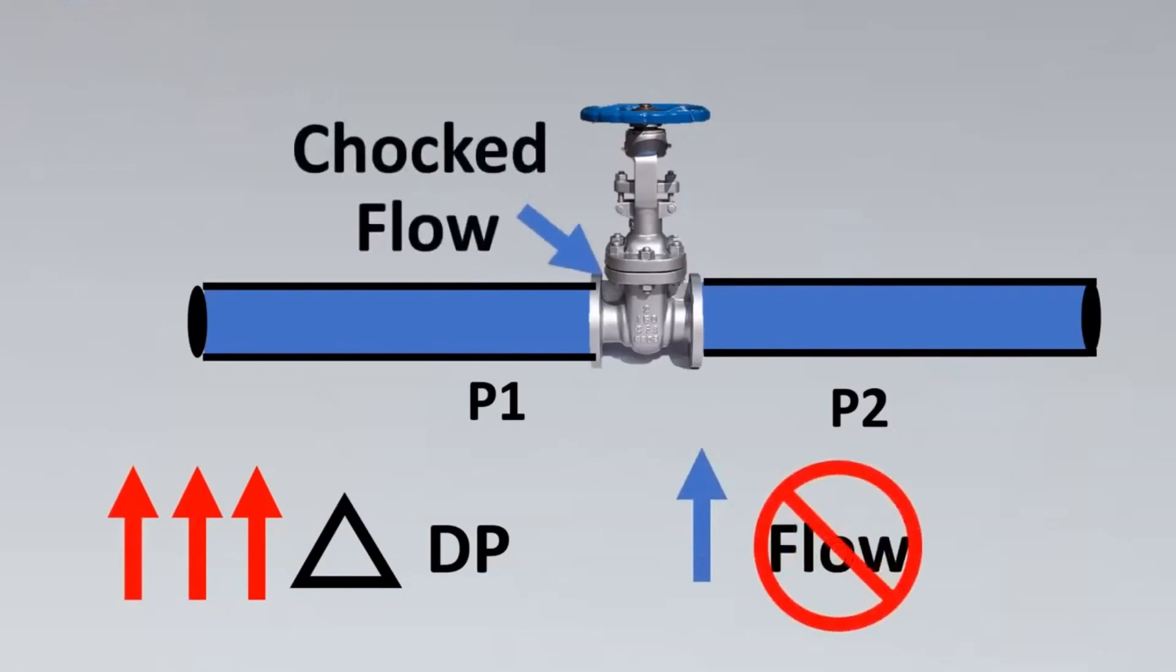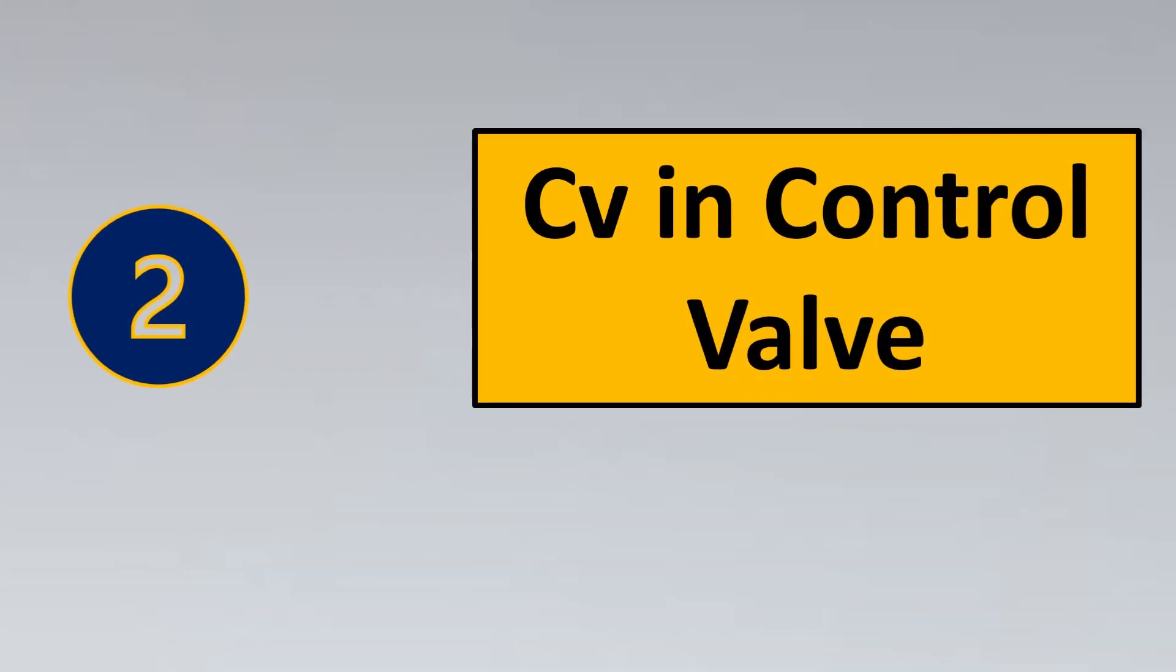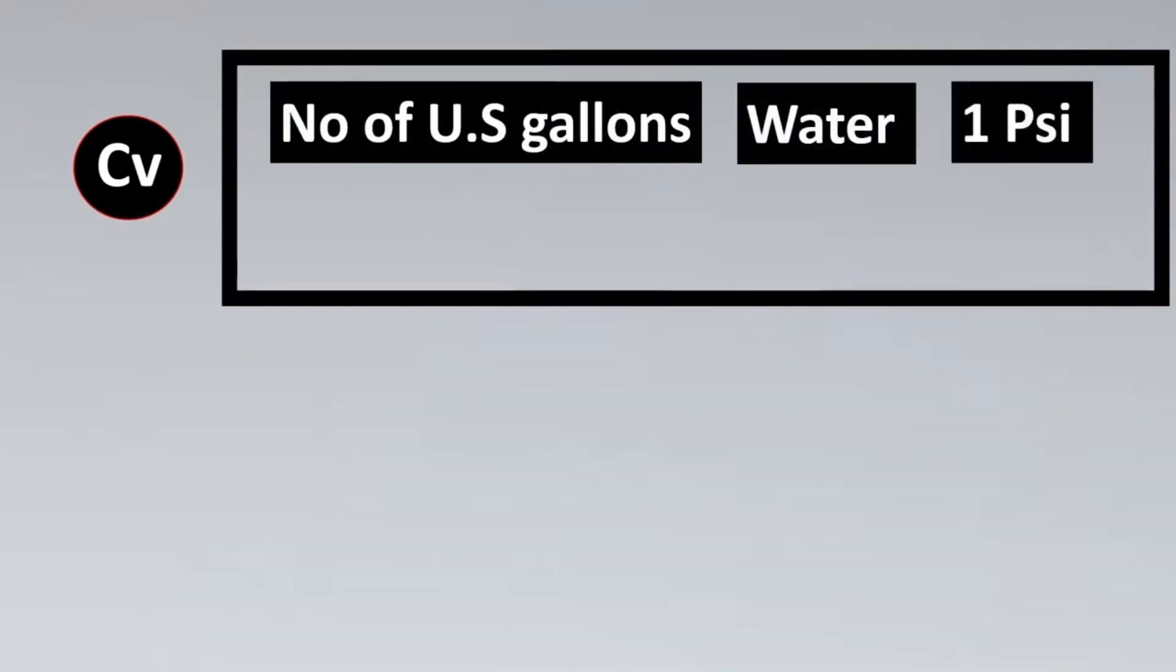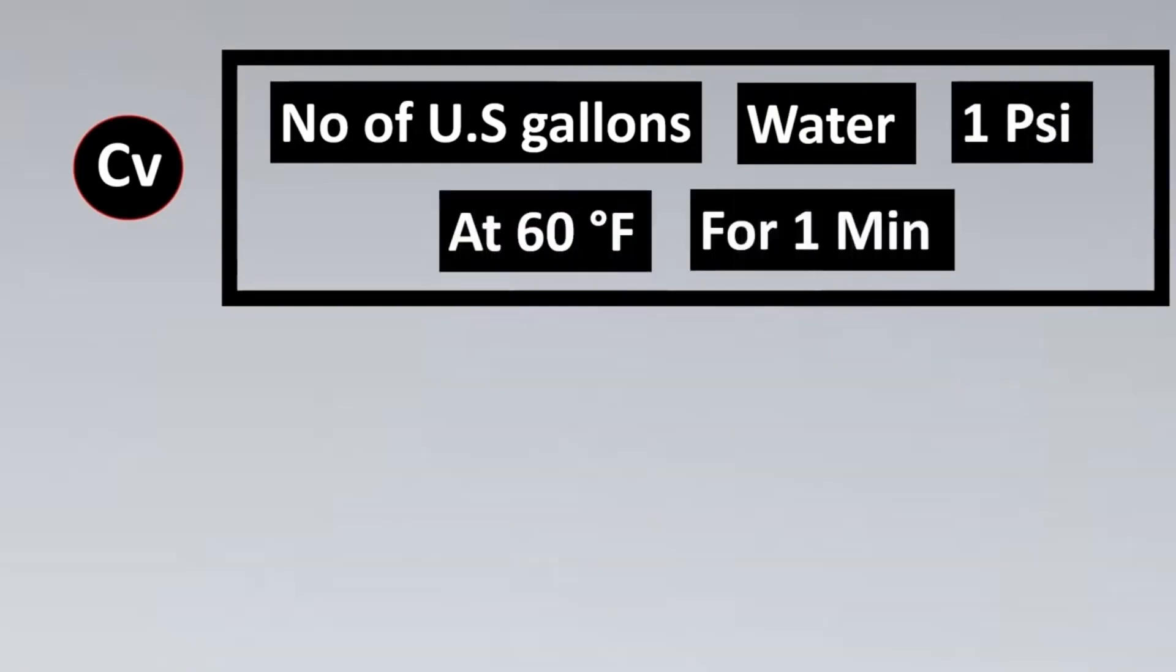The next most asked interview question is what is CV in a control valve? CV is the number of US gallons of water that can flow through a valve with one PSI pressure drop at 60 degrees Fahrenheit for one minute.